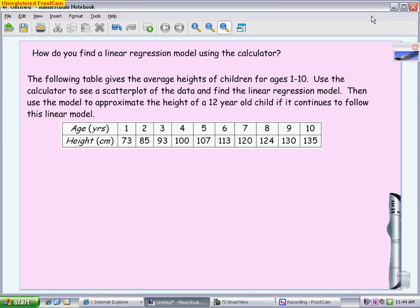So here's our problem, which gives a table. The table represents the average heights of children ranging in ages from 1 to 10. We're going to use our calculator to not only get a regression model, but also see what the scatter plot looks like so we can see what type of relationship the data has, if any. Then use the calculator to help us figure out what the prediction would be for the height of someone that is 12 years old if it continues to follow this linear pattern.